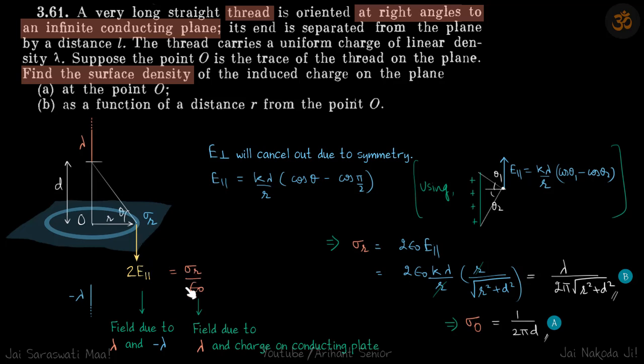We are going to equate this with the field just in vicinity of a conductor, which is sigma r by epsilon. This two E parallel is field due to lambda and minus lambda, and sigma r by epsilon is field due to lambda and charge on the conducting plate.